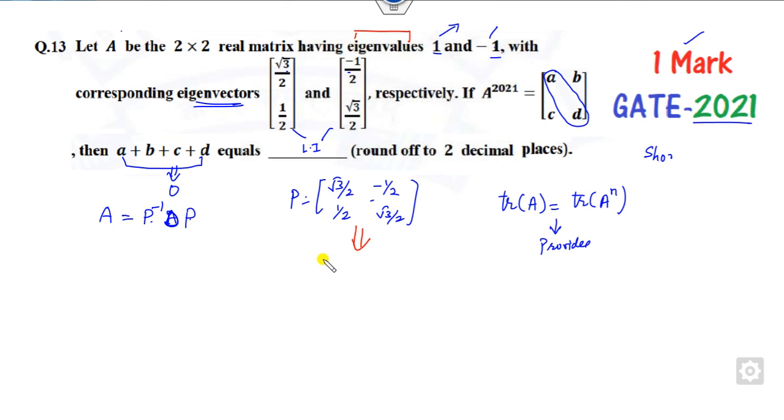Think about writing this in the form of cos theta, sine theta, minus sine theta, cos theta. If yes, then you can easily find A raised to power N by directly writing the sum of all values as lambda 1 plus lambda 2 plus sine of 2 theta.